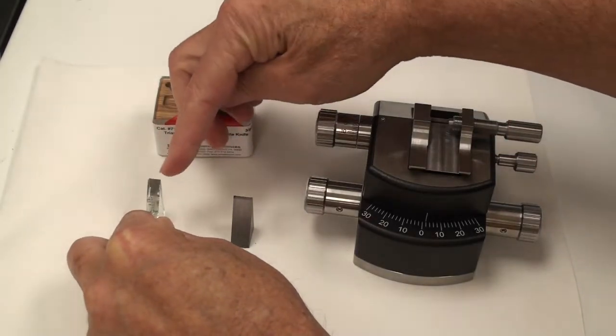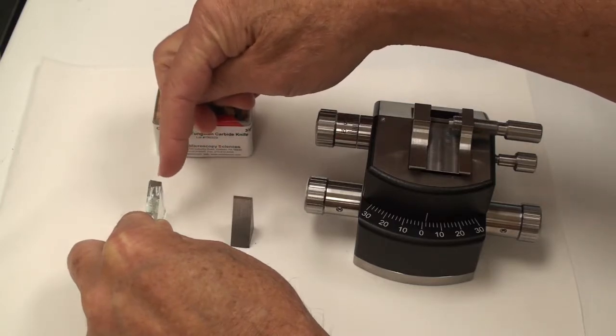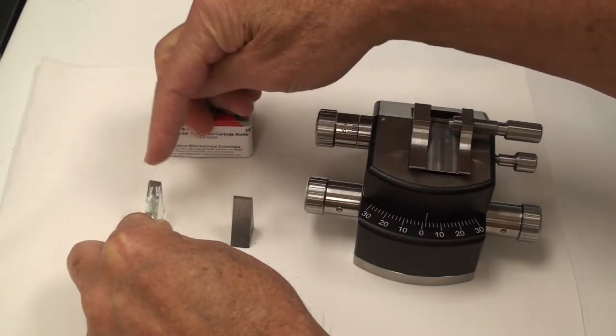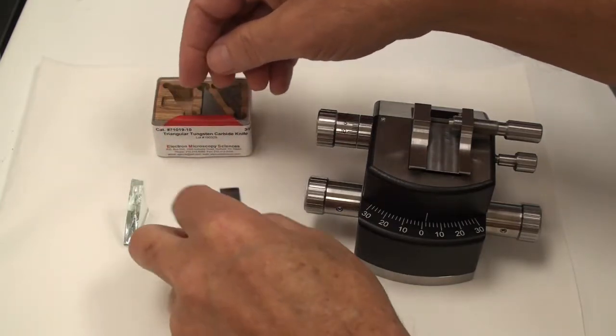Typically, we have either a glass knife or a diamond or a tungsten carbide knife. The problem with glass is the back of it is slightly curved, and so then your block face has a curvature to it.